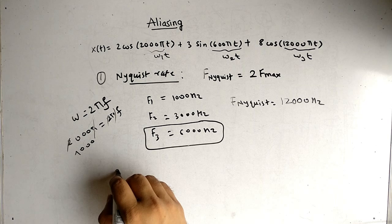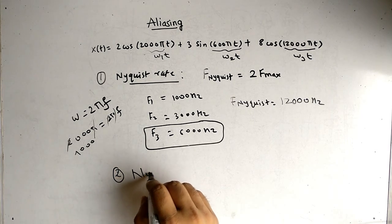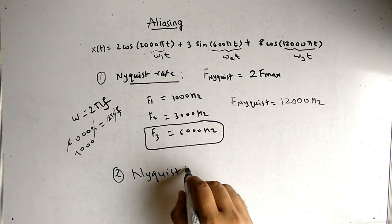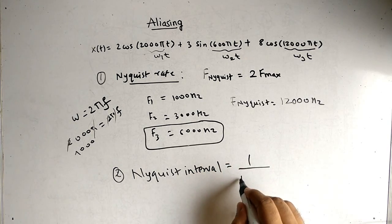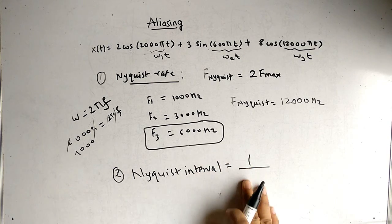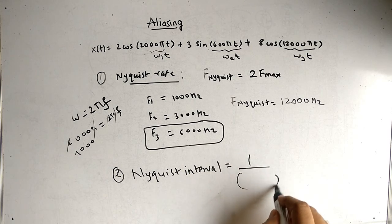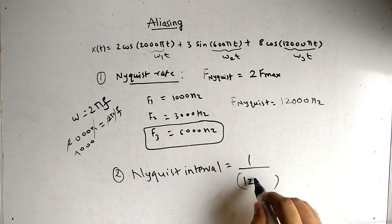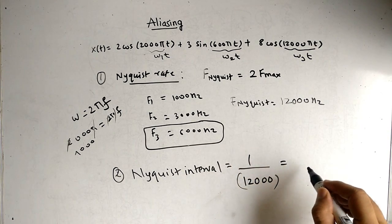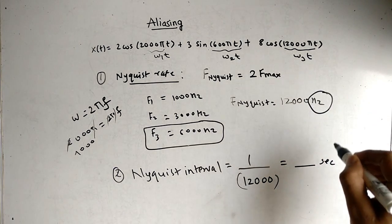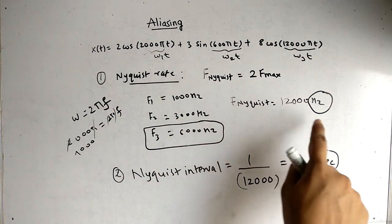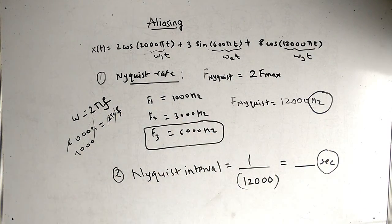Now if somebody asks you what is Nyquist interval: Nyquist interval is 1 by Nyquist rate. So 1 by Nyquist rate, and the answer should be in seconds. The units are also important. Nyquist rate is in hertz, Nyquist interval is in seconds.